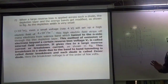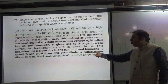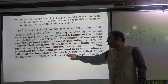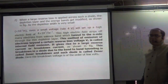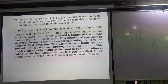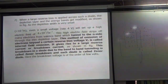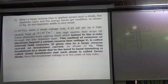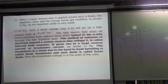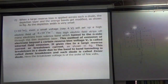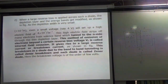This breakdown in the diode due to band-to-band tunneling is called Zener breakdown, and such a diode is called a Zener diode. The Zener diode works in reverse biasing — it is different from the normal PN diode. The difference between a normal PN diode and a Zener diode is the level of doping.